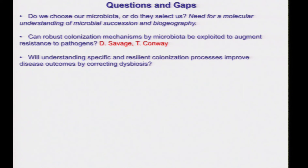In terms of questions and gaps: on a more teleological level, how do we assemble the microbiota? Do we choose our own microbiota or do they select us? Have they, over the millennia, evolved mechanisms to associate with hosts in a very specific way? If we can understand those molecular mechanisms, then we can really understand microbial succession. There's also biogeography — different organisms in different regions of the gut. Harder to sample in humans, easier in mice, but still not that many people are doing this. There's also important distinction between longitudinal versus cross-sectional biogeography.